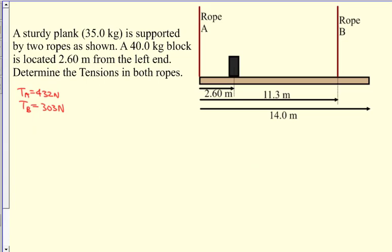This is like a scaffold. So that brown thing there is a board. And there is rope A holding it up, and rope B, that's not all the way at the end. And then we have this 40 kilogram block right there. That's also in the midst of this thing. And so we want to determine the tension in both ropes.